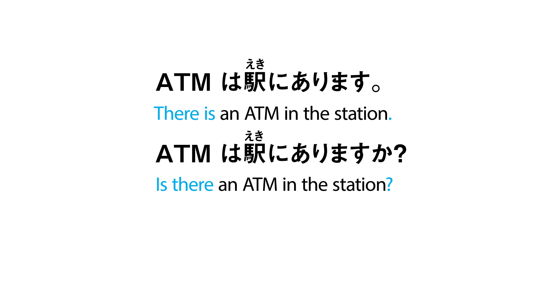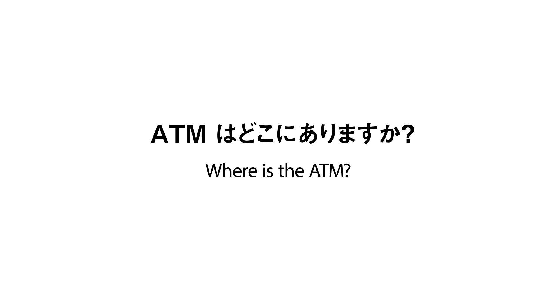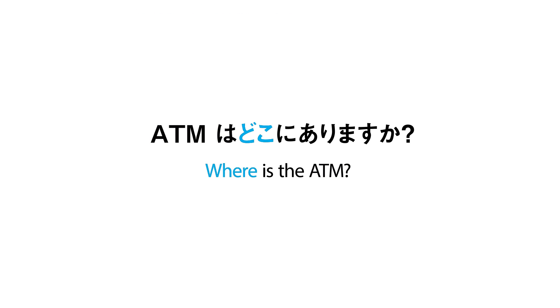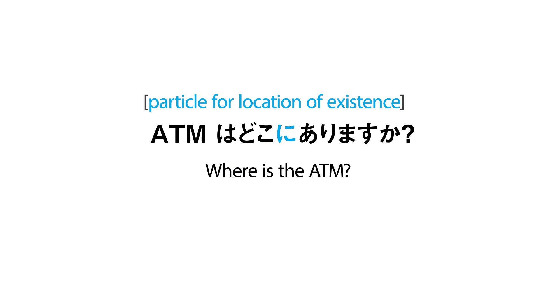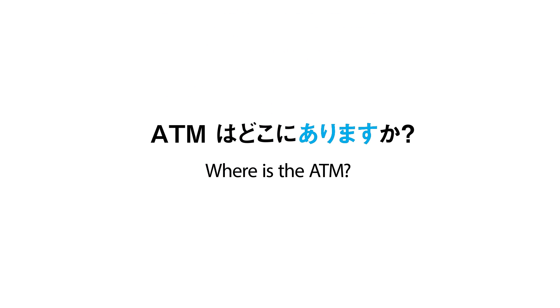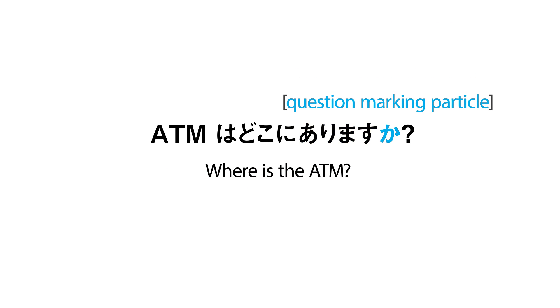But let's say you want to ask a more general question. Now you're no longer worried about the station, but simply want to ask where the ATM is. You would say: ATMはどこにありますか — where is the ATM? Let's break this down. ATMは — topic marking particle. どこ — where. に — particle for location of existence. あります — to exist, for inanimate objects. か — question marking particle.